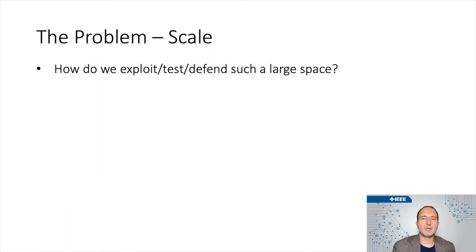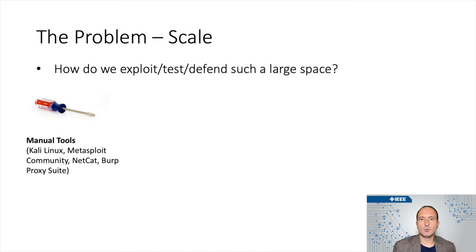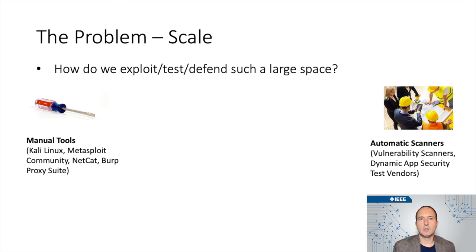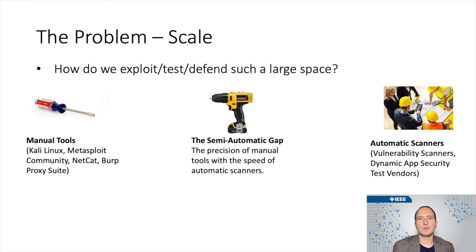I've always been a big fan of manual testing. Since I started pen testing, I love taking tools like Burp Proxy Suite or Netcat and literally sending the request by hand to the application. This works great — you have a lot of control and get to use human creativity — but it's slow. I like to think of this like building a house with a screwdriver and a hammer, versus telling a contractor to build a house for you. With automatic scanners, you can tweak some settings, but they do it their way and it doesn't necessarily have that human ingenuity. So there's a big gap in the middle I call the semi-automatic gap. How do we get that precision of manual tools with the speed of automatic scanners?